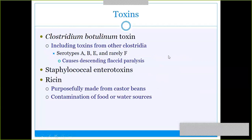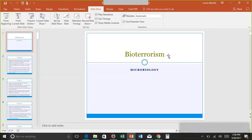You don't necessarily need the organism present to cause disease — just the toxin. Clostridium botulinum toxin (botulism) is a well-known cause of paralysis. We use it as Botox, but in an uncontrolled dose it can cause paralysis throughout the body. Ricin, made from castor beans, is another toxin used in bioterrorism. Know each of these organisms, the basic test results, and how they are transmitted.